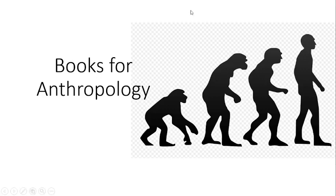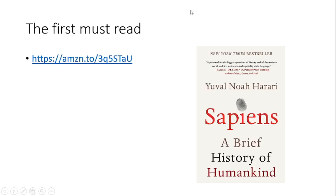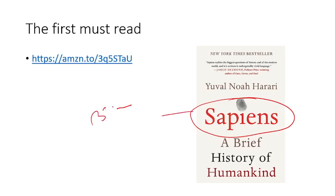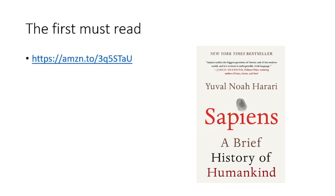If you haven't subscribed or liked, please do subscribe and like the channel. So the first book I will suggest you to read is Sapiens — this is a very good book. Sapiens will help you to answer questions about why you were interested in anthropology when you had different branches. Many people from MBBS or different science backgrounds select anthropology with the perception that it is static. First of all, remove this perception. Anthropology is not a static option; as much as you include current affairs, you will get more marks. This is a book by Yuval Noah Harari — Sapiens: A Brief History of Humankind.